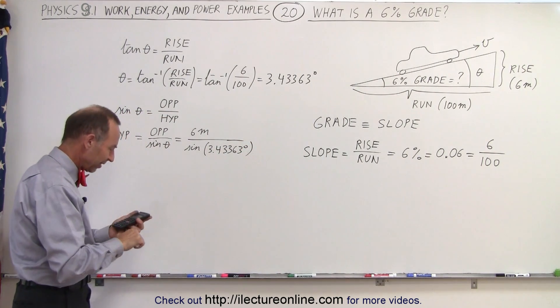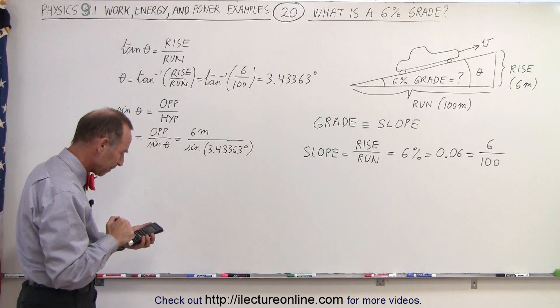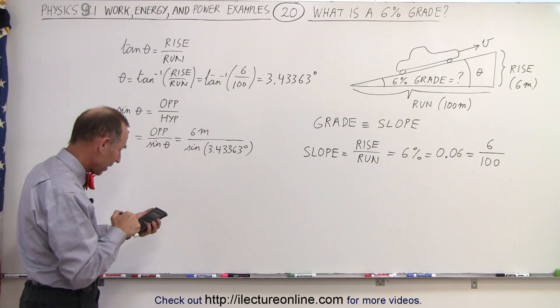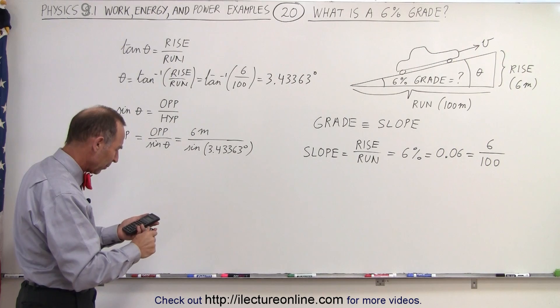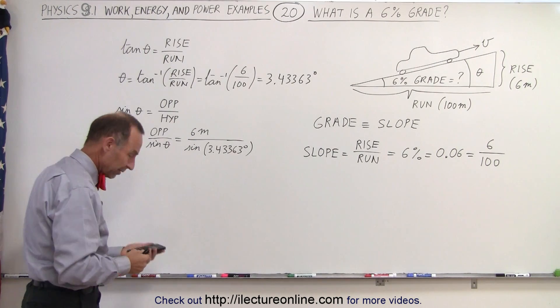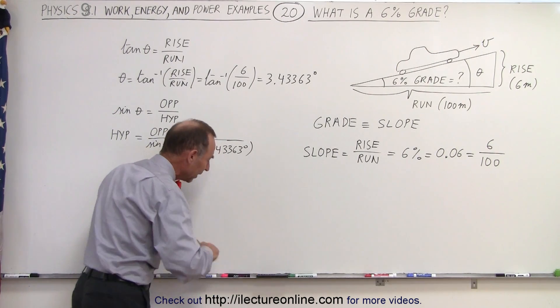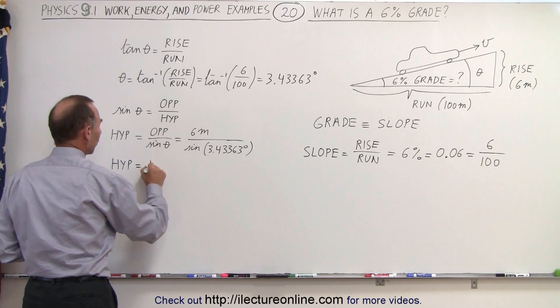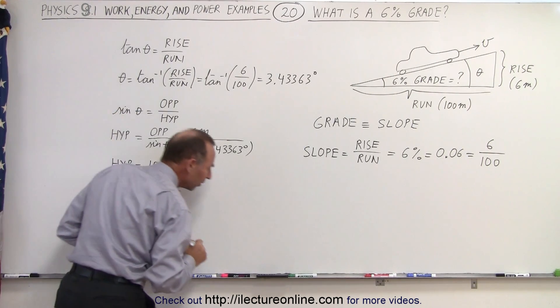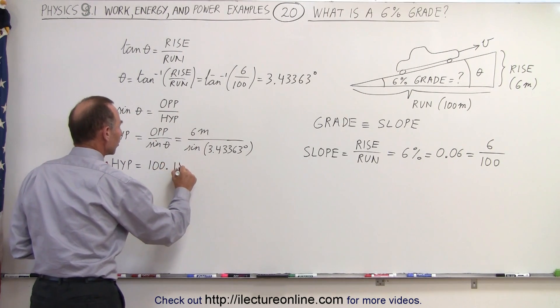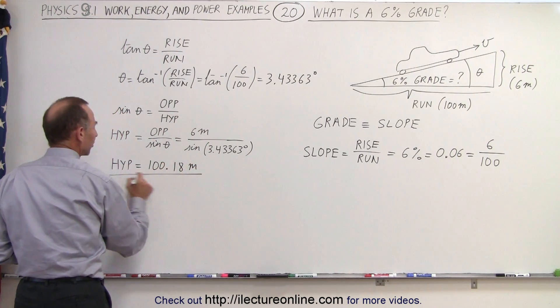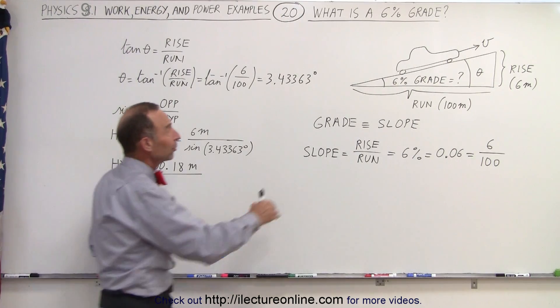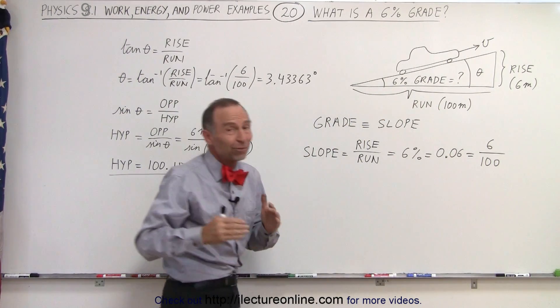Alright, so let's take the sine of that and take the inverse of that and multiply that times 6, and this is what we get. If I can take the cap off my pen, that means that the hypotenuse is equal to 100.18 meters.